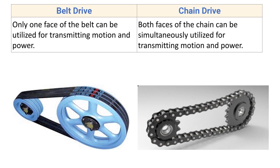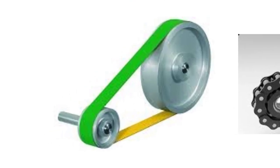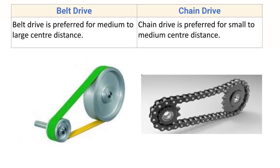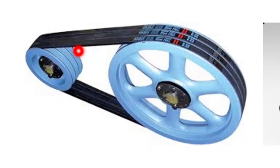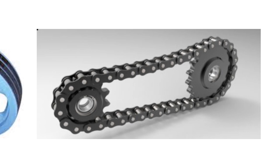In belt drive, only one face of the belt can be utilized for transmitting motion and power. Only the inner surface of the belt contacts the outer surface of the pulley, while in V-belt only the two outer side surfaces come in contact. In chain drive, however, both faces of the chain — the outer and inner face — can be simultaneously utilized for transmitting motion and power.